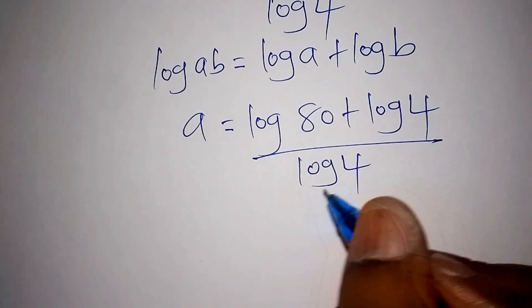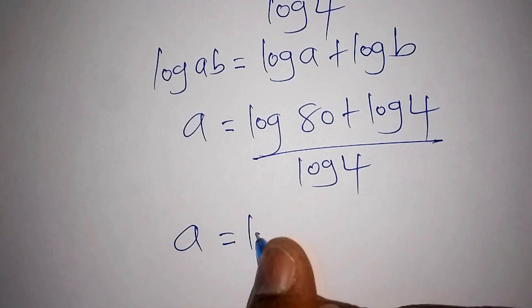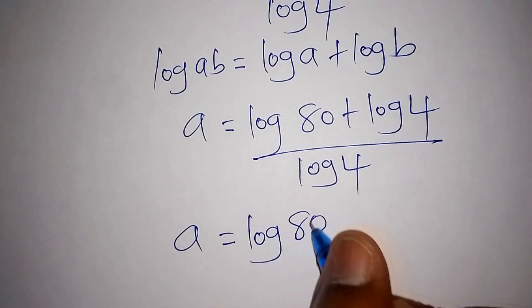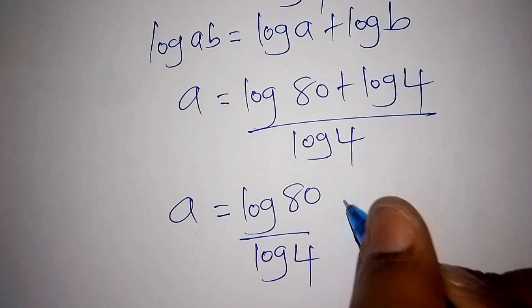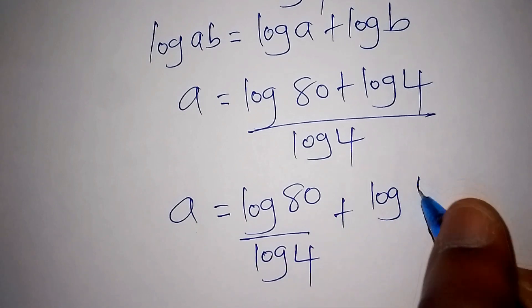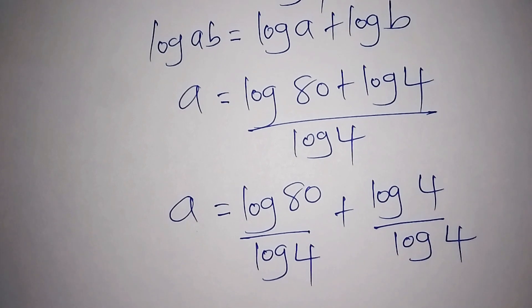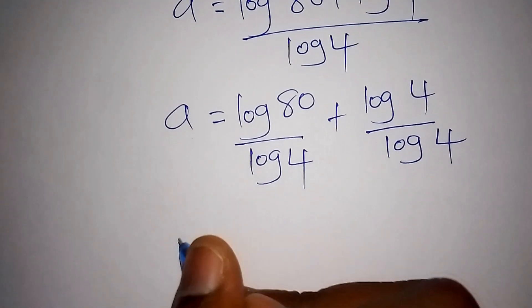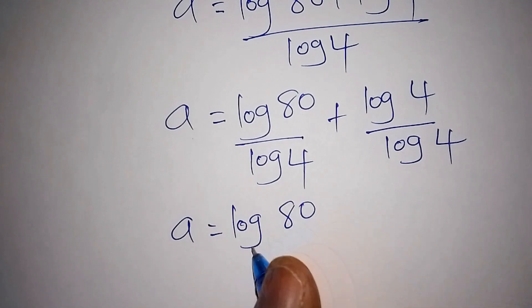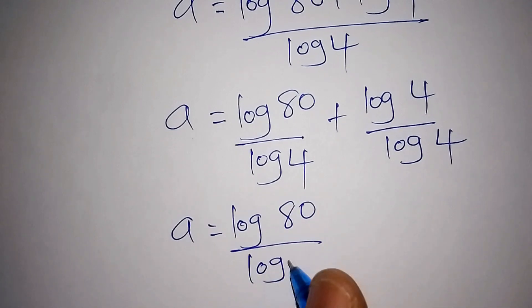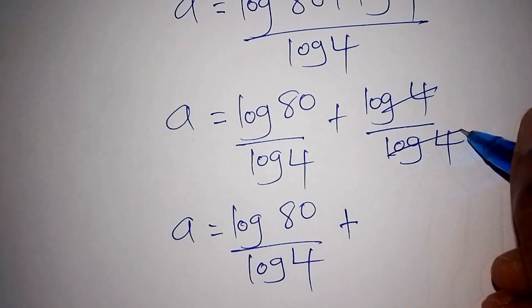From there, we divide through by log 4. So a equals log 80 all over log 4, plus log 4 all over log 4. Since log 4 divided by log 4 equals 1, we now have a equals log 80 over log 4, plus 1.